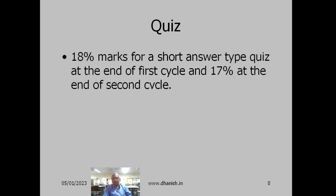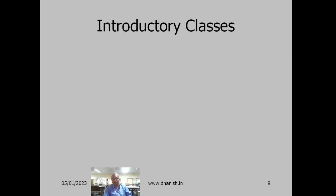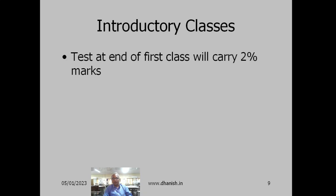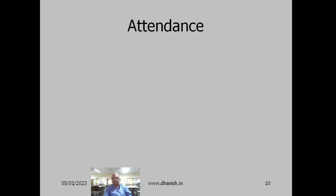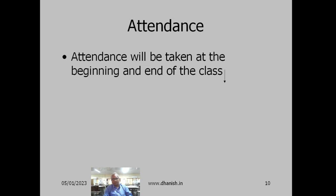There will be 18 marks for a short answer type quiz at the end of the first cycle, and 17 marks at the end of the second cycle. For introductory classes, the first class will have a quiz for 2 marks and the second class for 3 marks. No makeup test will be possible for these tests. Attendance will be taken at least at the beginning of each class, so don't miss classes unnecessarily.